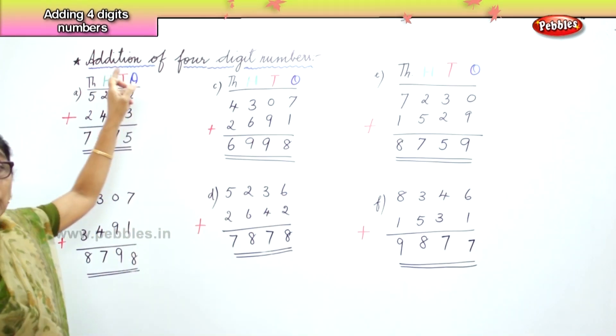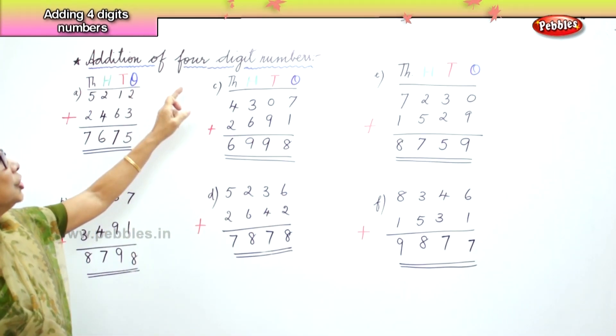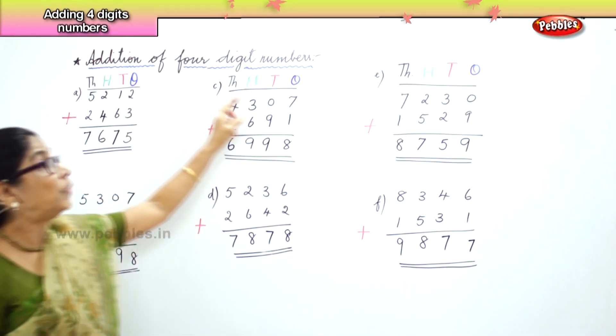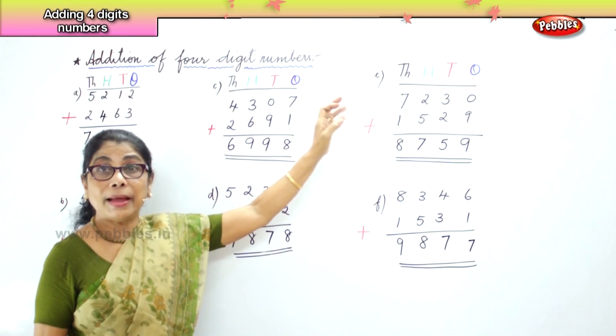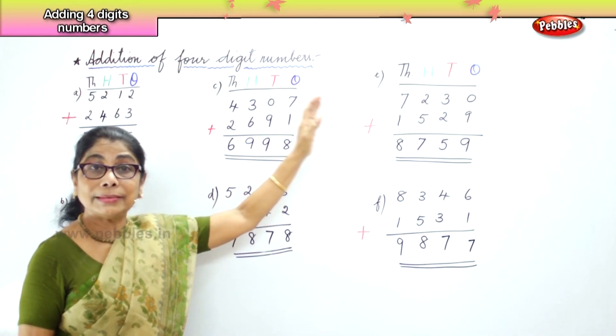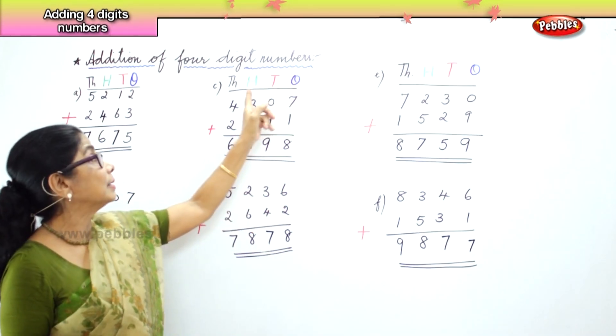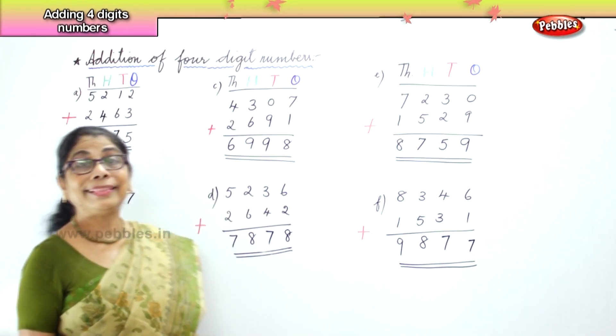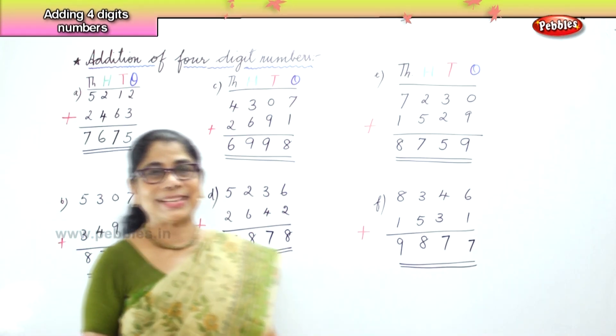What we learned now is addition of four digit numbers: ones, tens, hundreds, thousands.